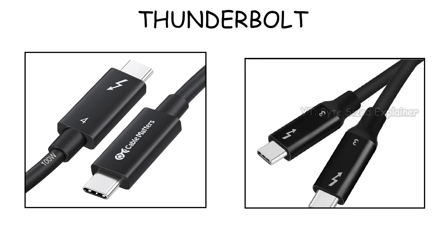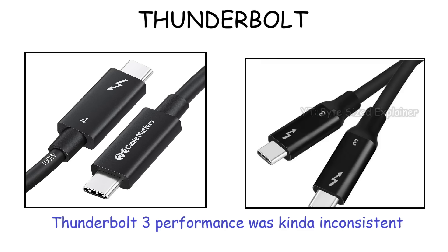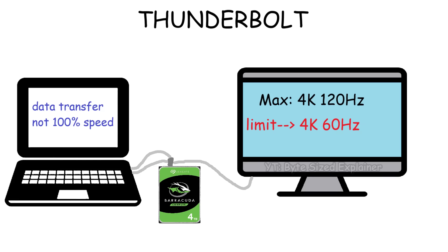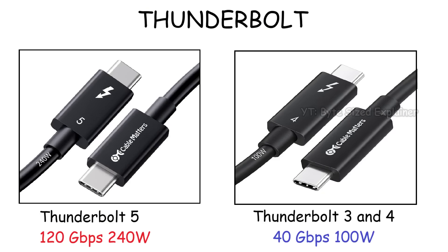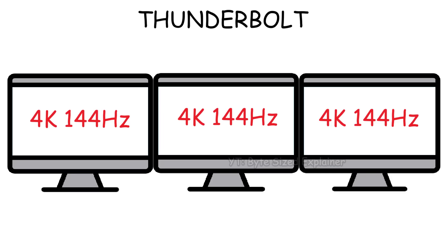Then Thunderbolt 4, which still looks like Thunderbolt 3 and has the same speed, but it guarantees that all certified cables and devices work at full performance. So sometimes a hard drive only transferred at half speed using Thunderbolt 3, or a 4K monitor that was supposed to get a higher refresh rate got limited to 60Hz on certain laptops. And finally, the newest version is Thunderbolt 5, which can reach up to 120 gigabits per second of bandwidth — three times the amount of Thunderbolt 4 — and supports up to 240 watts of power delivery for charging high-end laptops.